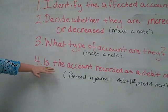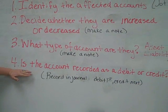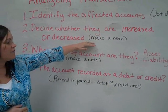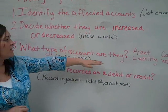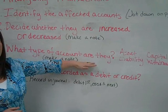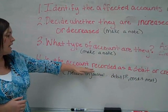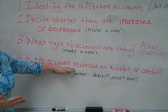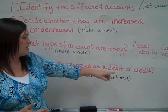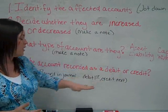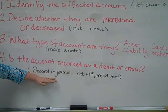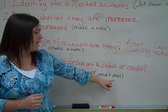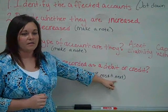At this point, that will help you decide what number four is. Once you've identified the account, decided if it's an increase or a decrease, and decided what type of account it is, then you can say that account needs to be recorded as a debit or as a credit. Once you decide the debit and the credit, record the transaction in the journal, recording the debit first and the credit after that.